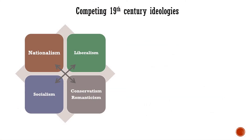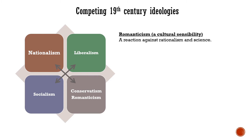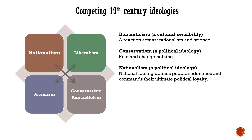Another way to look at these different ideologies is how they competed with one another, how in many aspects they represented the opposite of another ideology. Romanticism was a reaction against the rationalism and science that came out of the Enlightenment and the Scientific Revolution. Conservatism, very similar to it, is sometimes summed up as 'rule and change nothing' — after the French Revolution, they just wanted to roll back the clock so rulers would rule and leave things alone. At the opposite end of Conservatism and Romanticism is Nationalism — the idea that we hold our loyalty not to a king or an aristocrat born into position, but rather that we have a national feeling that defines our identity and commands our ultimate political loyalty.